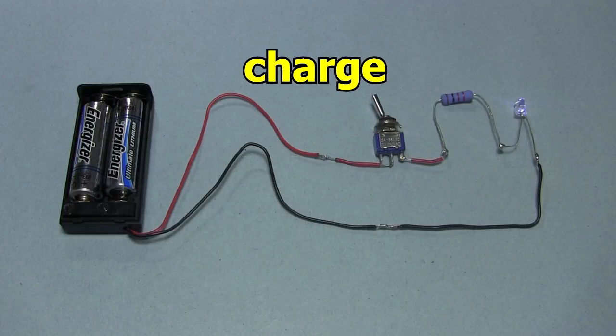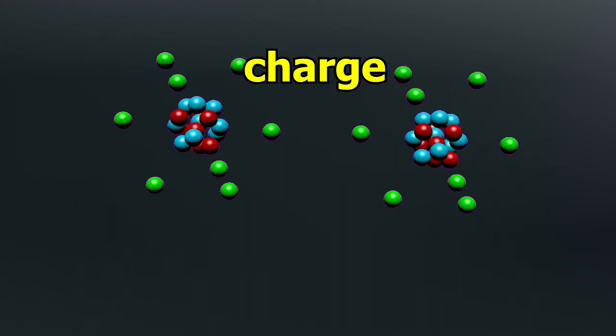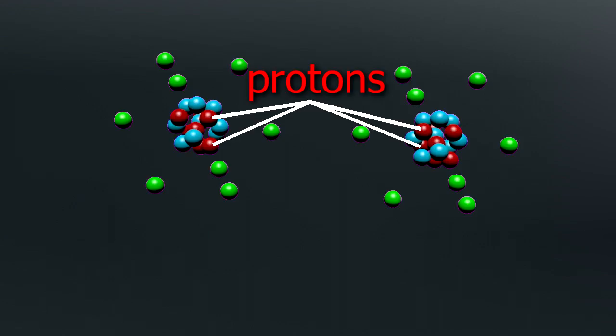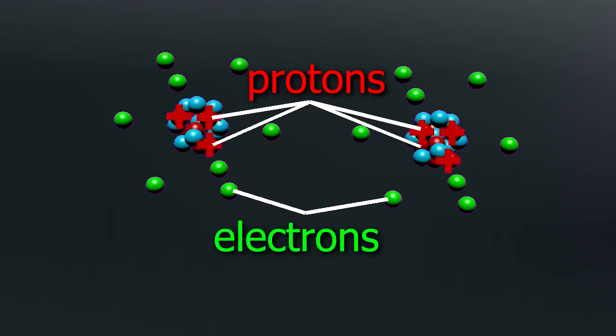What's charge? Charge is a property of the particles found in and around atoms. Using the orbital model of atoms, we have protons in the nucleus of the atom and electrons around the nucleus. The protons have a positive charge, and the electrons have a negative charge.